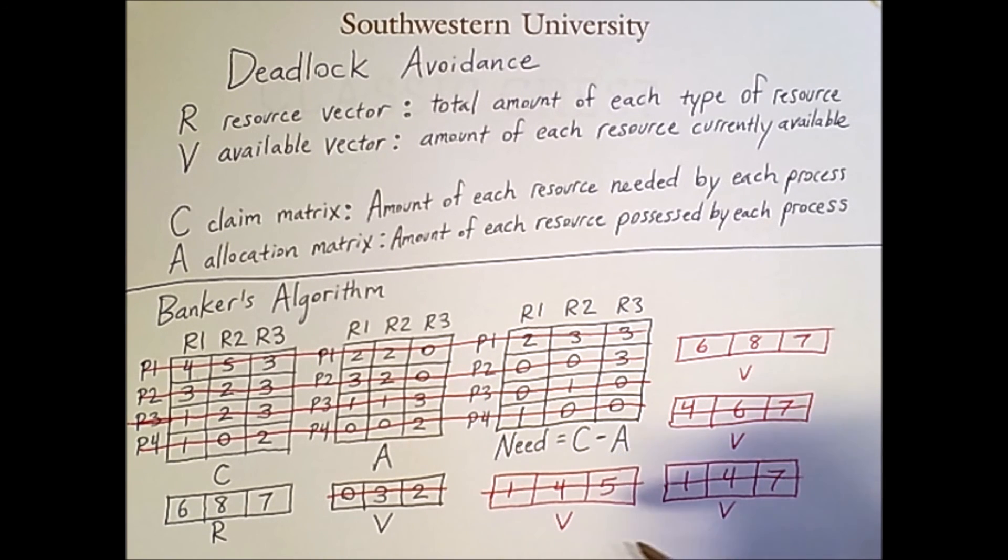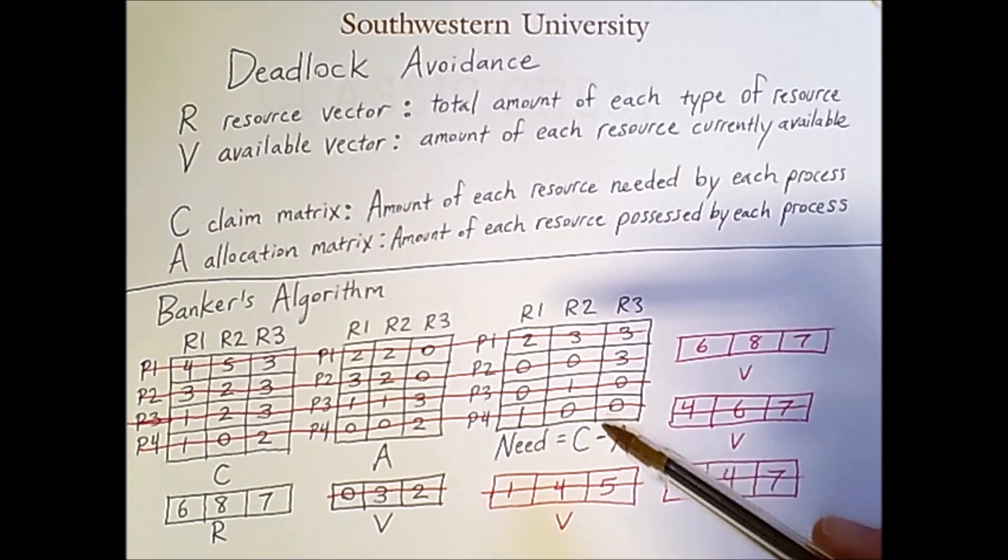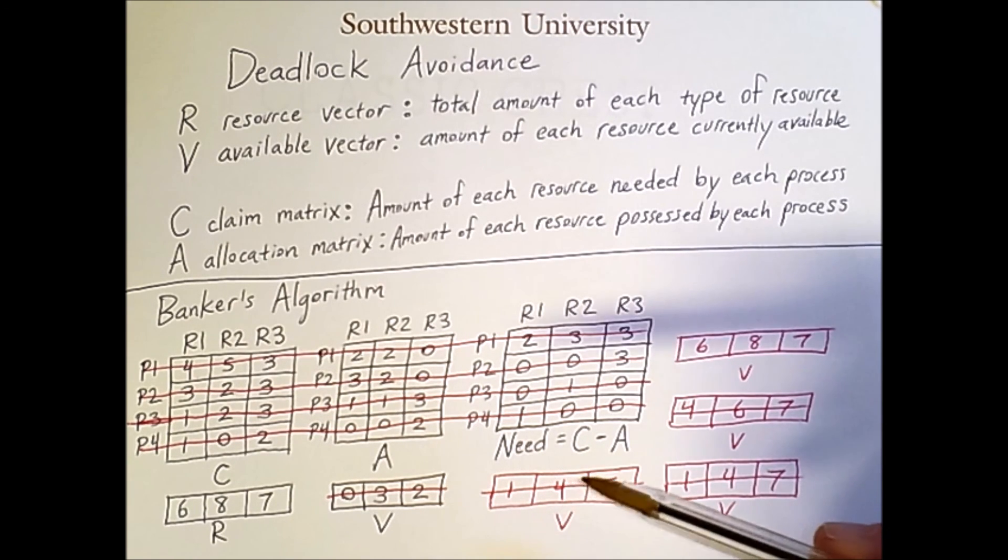So the fact that we were able to carry out this process all the way to completion shows that there was a way to run these processes without causing deadlock. If we had ever had a situation where none of the rows in the need matrix had a resource need less than what was available, then that would have been a problematic situation. However, if your system is running this algorithm from the time it boots up until the time you're done running all your processes, then it will assure that such a situation never arises.